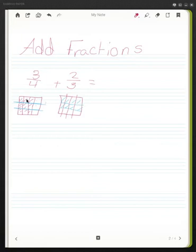So I can now count that 3/4 is equivalent to 1, 2, 3, 4, 5, 6, 7, 8, 9, 10, 11, 12. So there are 9 shaded out of 12.